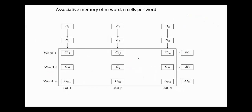The cells inside the memory array are marked by the letter C with two subscripts, I and J. The first subscript I is for the word number, and the second subscript is for the bit position inside the word. So C_IJ is the cell for bit J in word I.